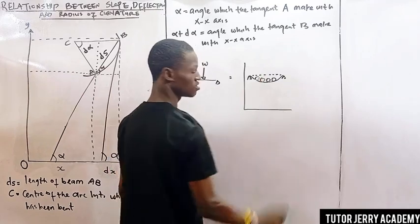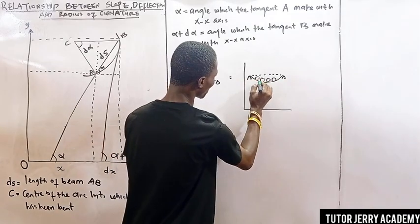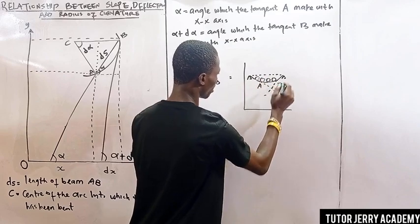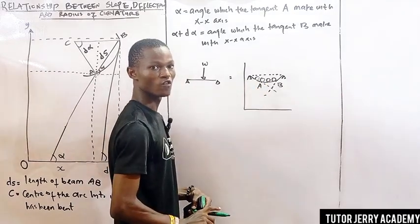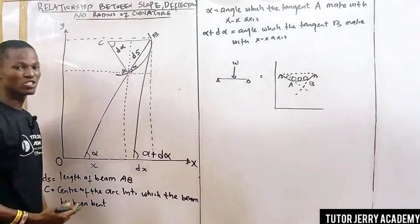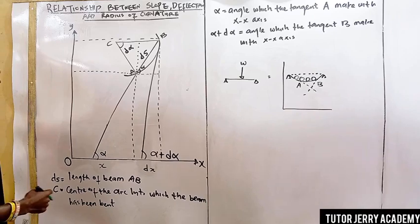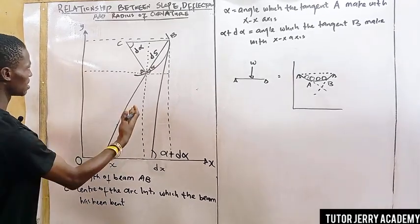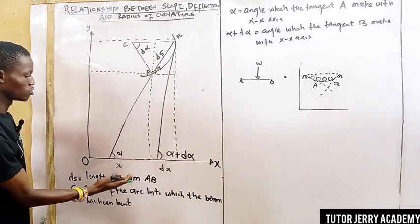If we are working in the x-y plane, we're going to have our tangent at point A and our tangent at point B. We are only considering this portion of the beam between points A and B — that is not the entire length of the beam, just the part we are considering. In this diagram, my ds is the original length of the beam arc AB, and my C is the center of the arc into which the beam has been bent.